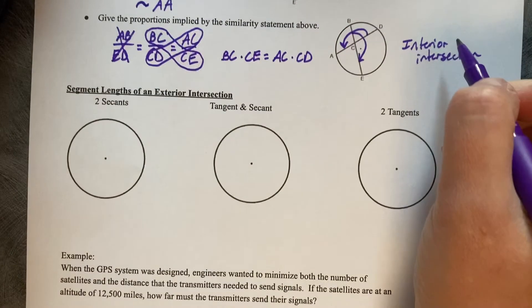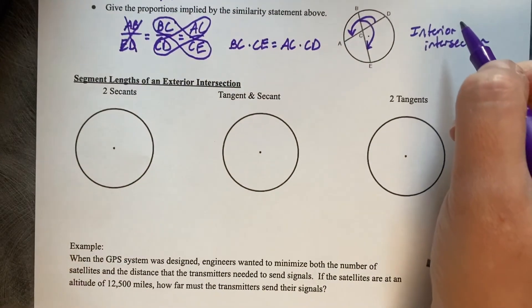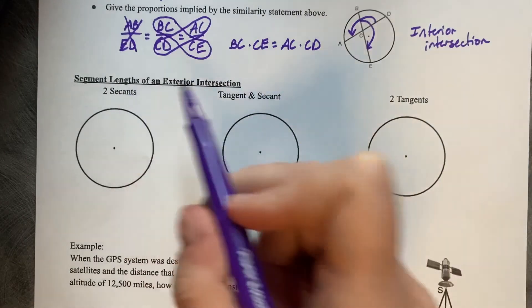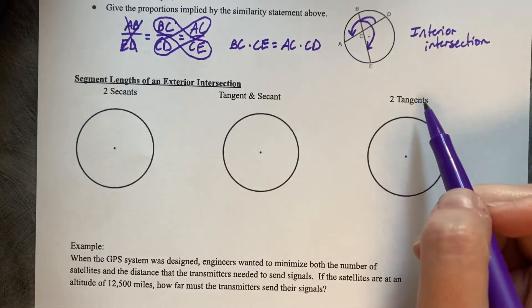And then we're also going to look at what happens when it's an exterior intersection. And again, there's three different scenarios that can happen: two secants, a tangent and a secant, and two tangents.